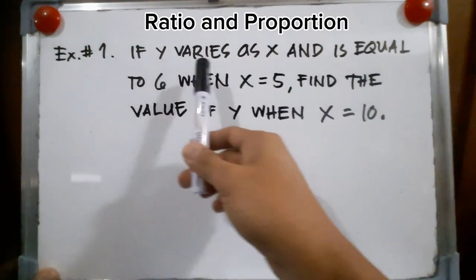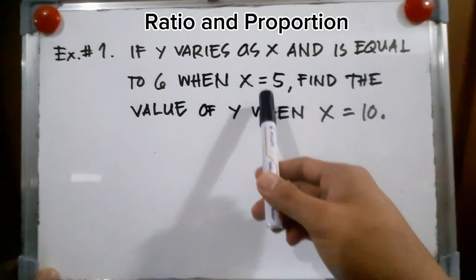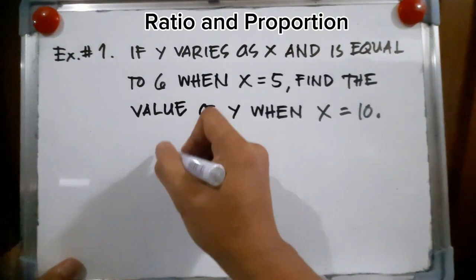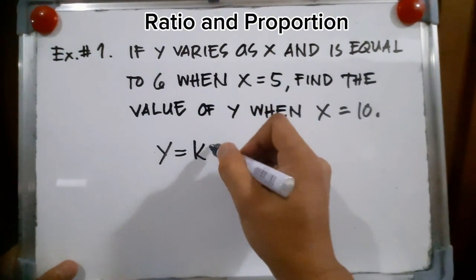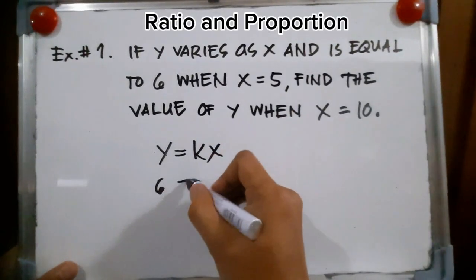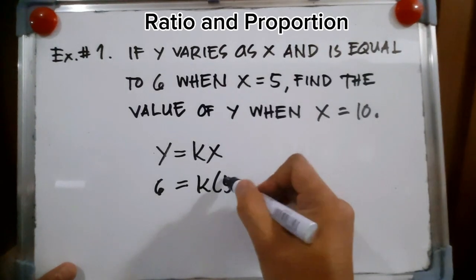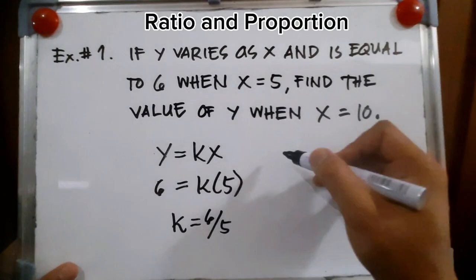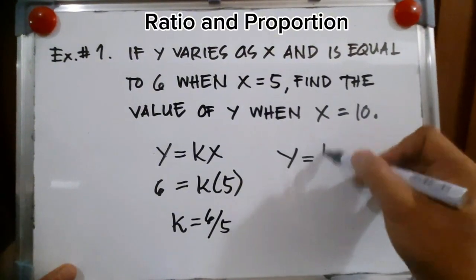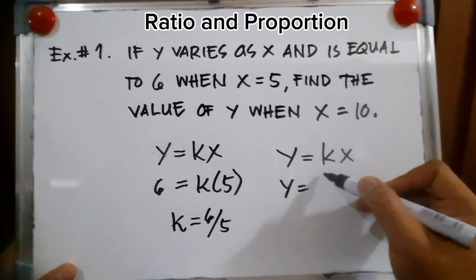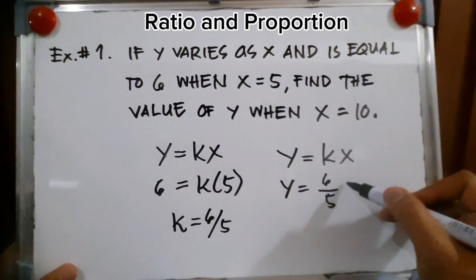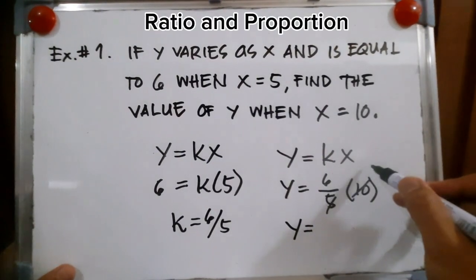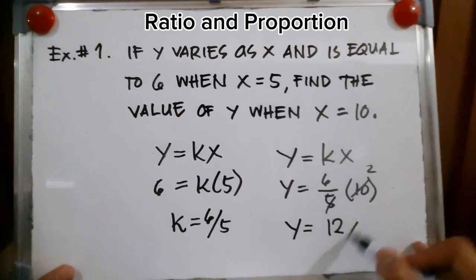Example number one: If Y varies as X and is equal to 6 when X is equal to 5, find the value of Y when X is equal to 10. This is direct variation. Y is equal to K times X, and Y is 6 when X is 5, so K equals 6 over 5. Then if X is equal to 10, Y equals K times X, which is 6 over 5 times 10, giving 60 over 5. Therefore, Y is equal to 12.